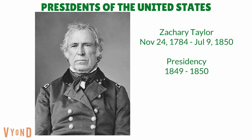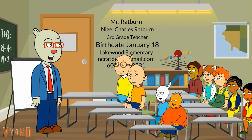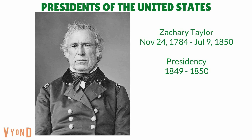Zachary Taylor was our twelfth president of the United States. He was born on the 24th of November, 1784. He was a president from 1849 to 1850. Mr. Haney, why was he president from 1849 to 1850? Okay, I'll tell you the reason why right now. On the 4th of July 1850, while giving out a long speech to everyone, he became ill. Five days later, on the 9th of July 1850, he died. He was our second president to die in office.